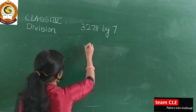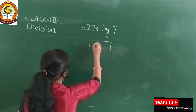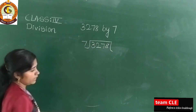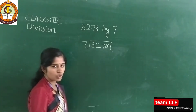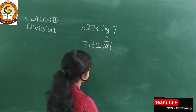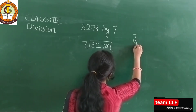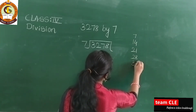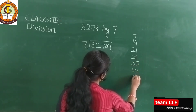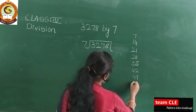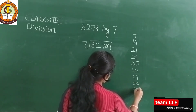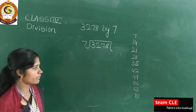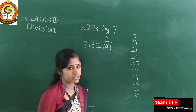Let us write the question. Draw the division bracket, write the big number inside: 3278, and divide it by 7. Write the 7 times table to the side: 7×1=7, 7×2=14, 7×3=21, 7×4=28, 7×5=35, 7×6=42, 7×7=49, 7×8=56, 7×9=63, 7×10=70. It is better to write tables on one side.